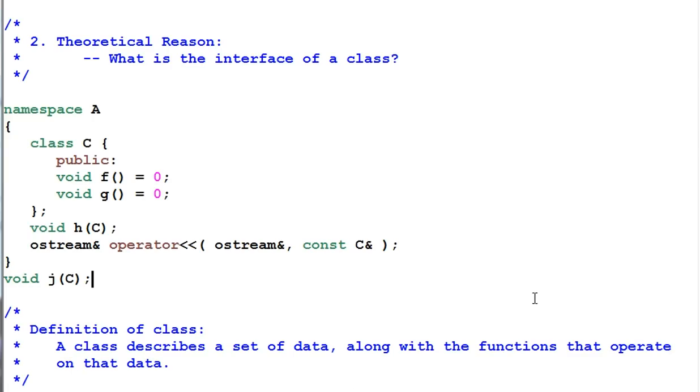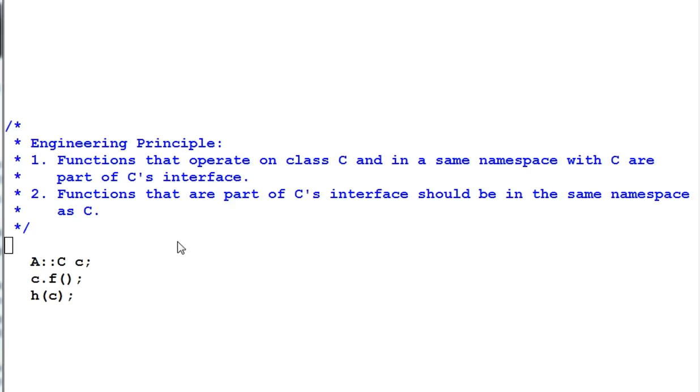So with that, I'm introducing an important engineering principle. The principle says functions that operate on class C and in the same namespace with C are part of C's interface. Vice versa, functions that are part of C's interface should be in the same namespace as C.